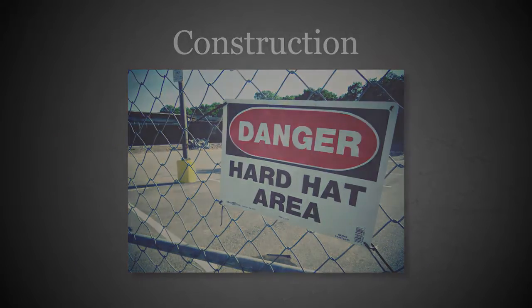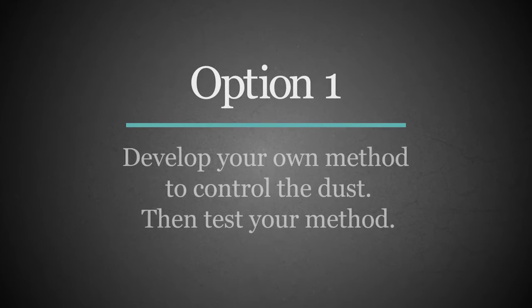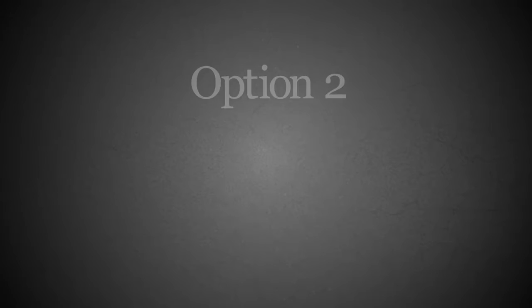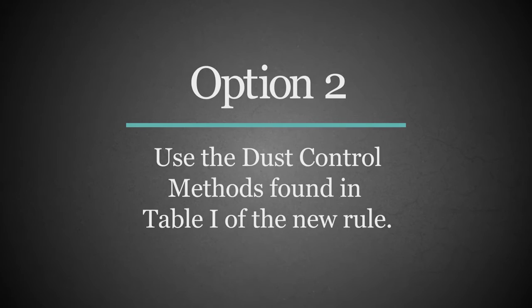The rule provides two options for construction. Option 1 is, in short, to control the dust with your own measures, then measure the amount of silica dust to which workers are exposed. If it's at or above the action level of 25 micrograms per square meter over an 8-hour time-weighted average, you must find better measures to protect workers from crystalline silica dust exposure. Option 2 is to simply follow the dust control methods in Table 1 of the Construction Standard.